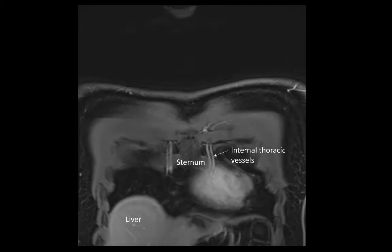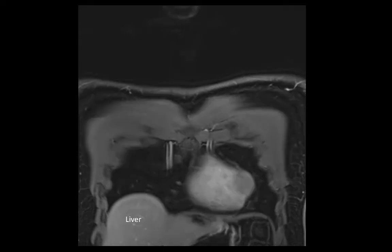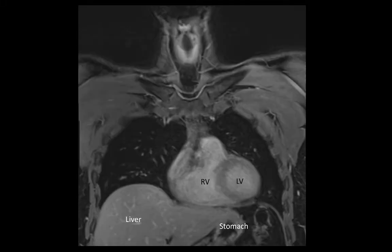More posteriorly we can see the right lung and the heart, and now we can differentiate the left and right ventricles of the heart. Now we can see the right atrium coming into view. We can see the tricuspid valve between it and the right ventricle. We can also see the continuity of the right ventricle with the pulmonary trunk.